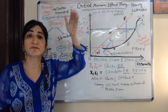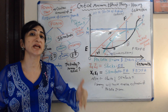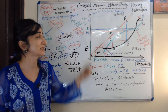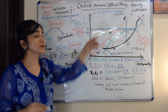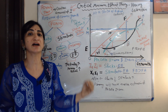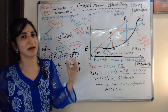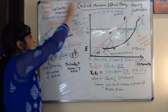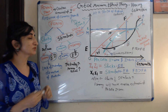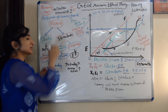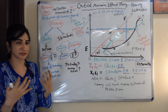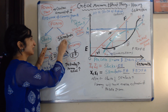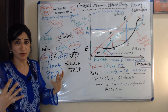If an underdeveloped country wants to break their vicious cycle of poverty, they need to do critical minimum effort. To understand this whole theory, you need to understand two types of forces: the first is shocks, and the other one is stimulants.